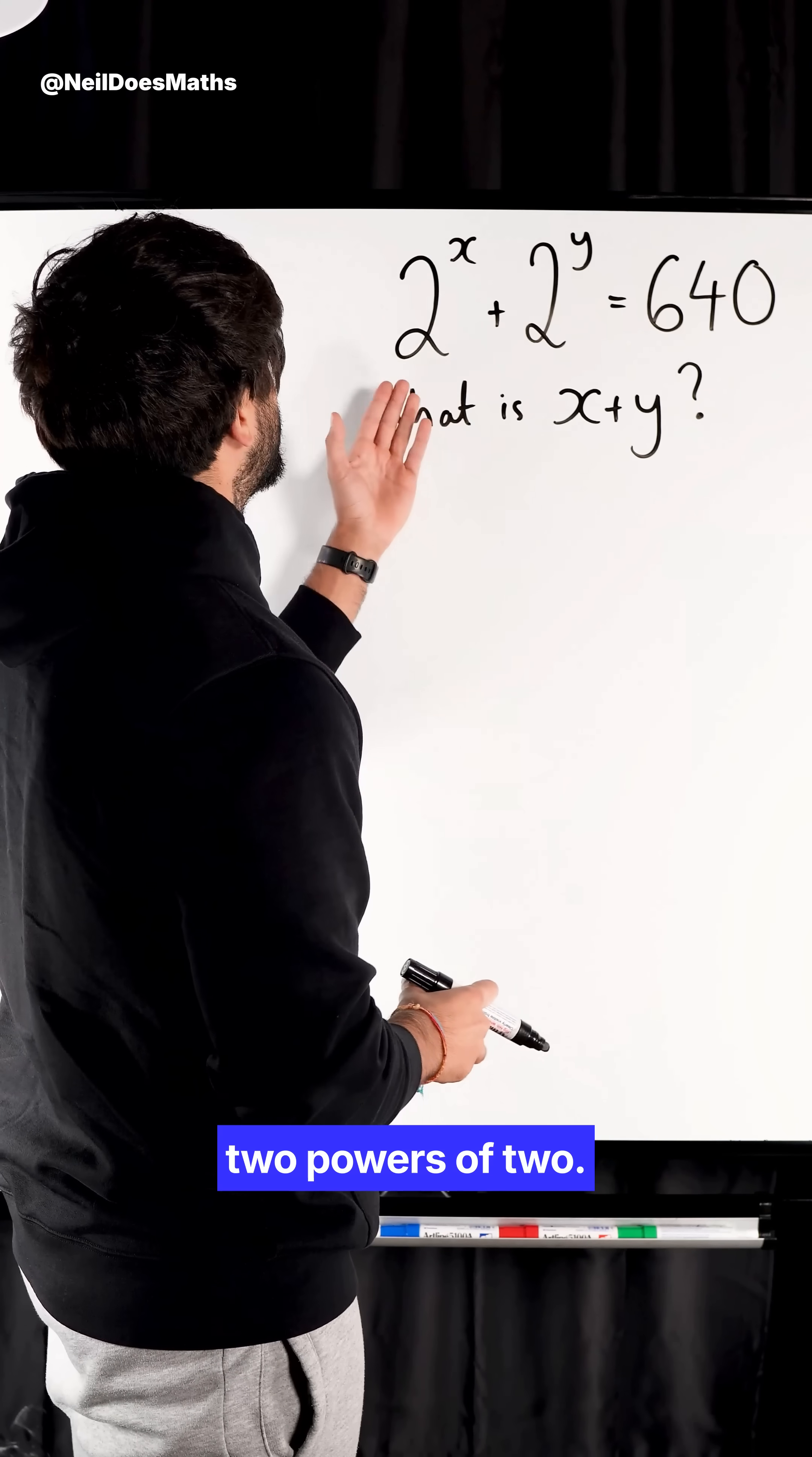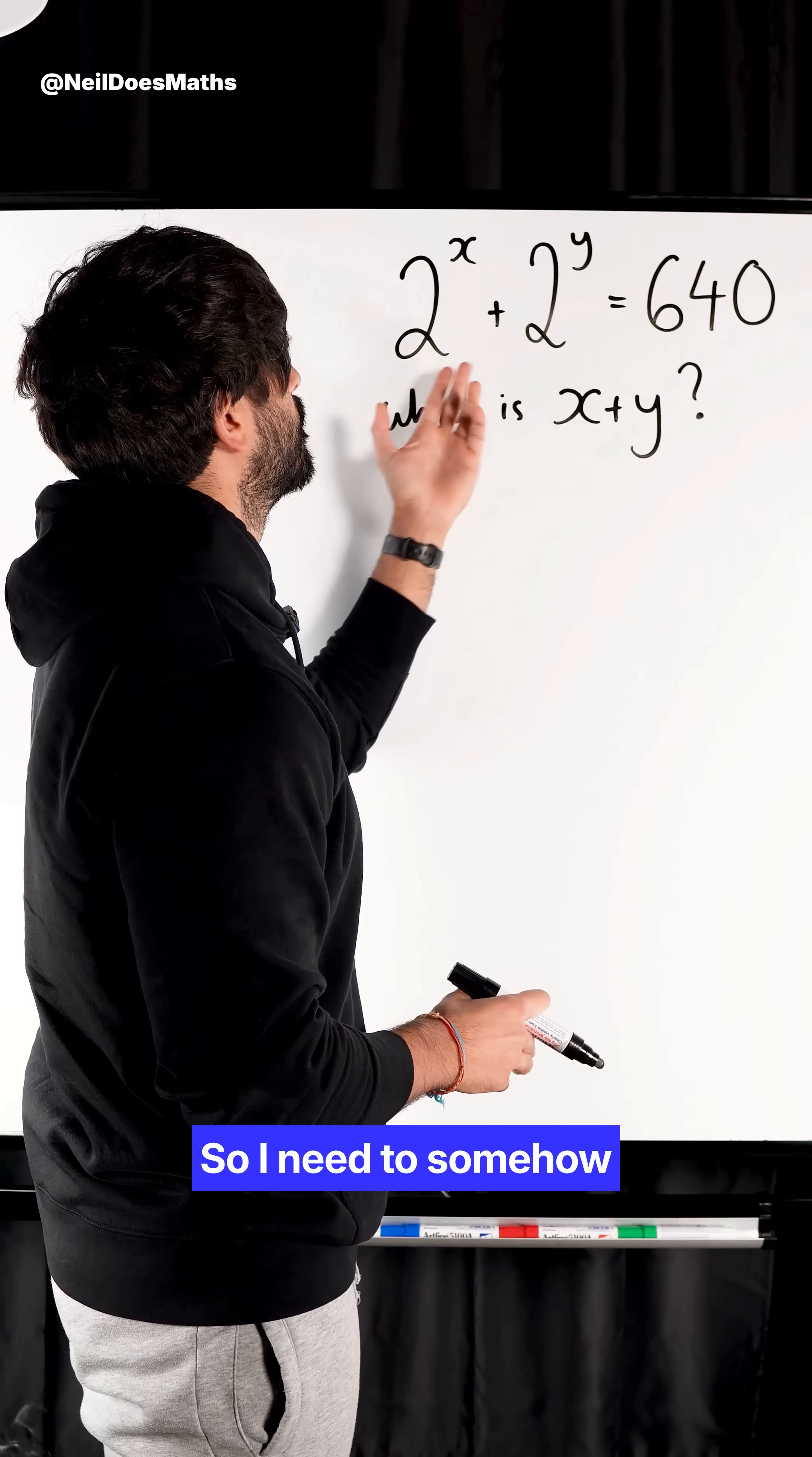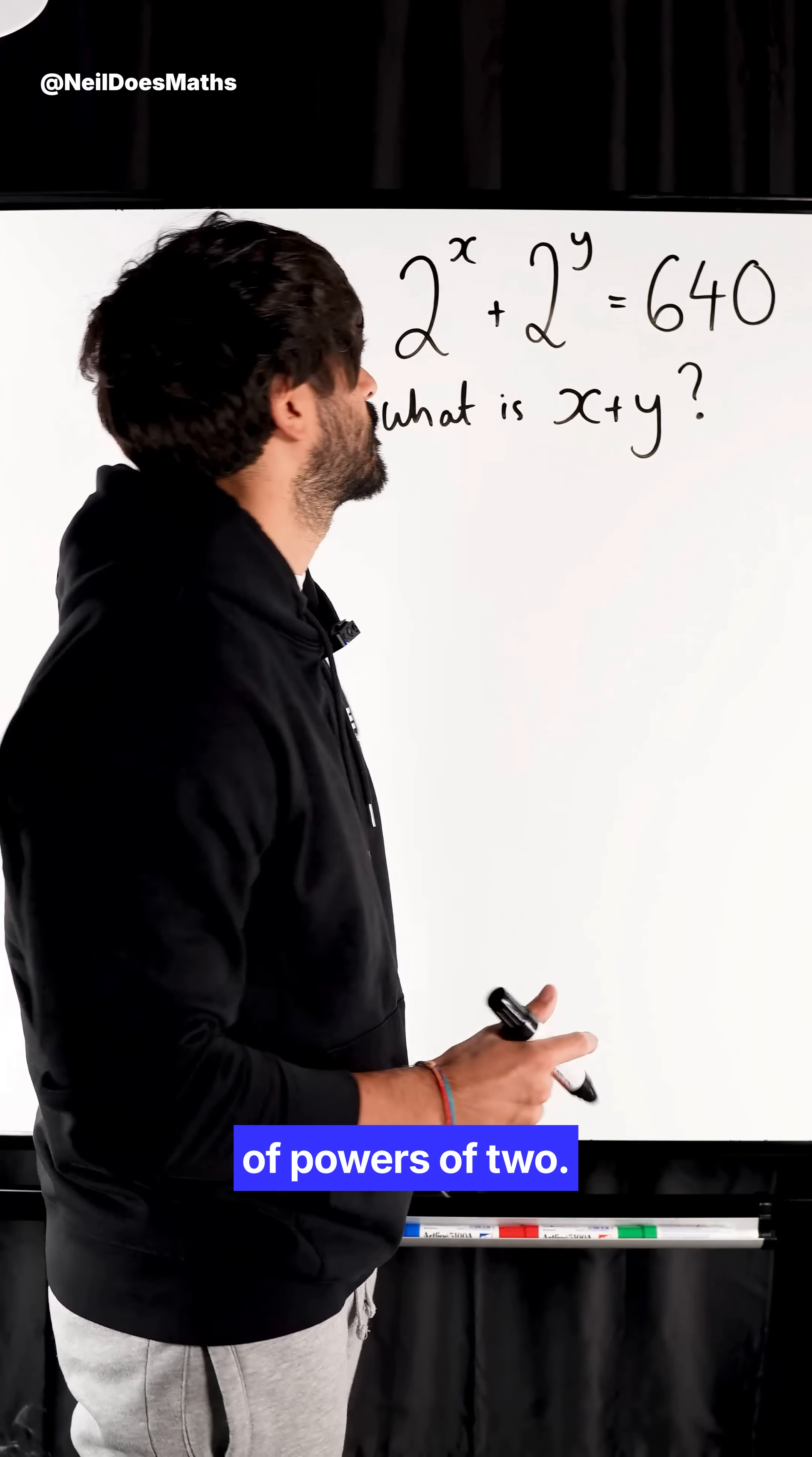Right, so we are summing two powers of 2. So I need to somehow rewrite 640 as the sum of powers of 2.